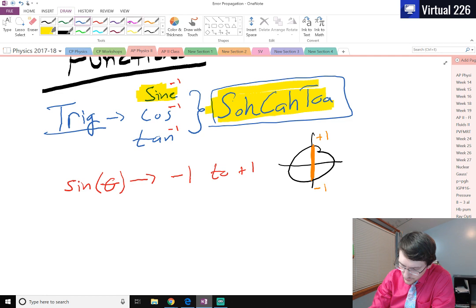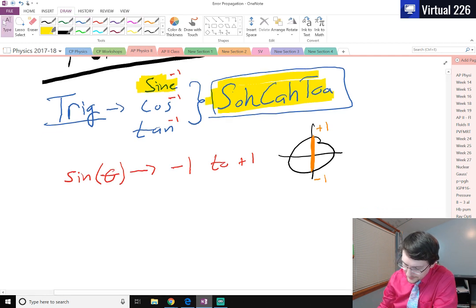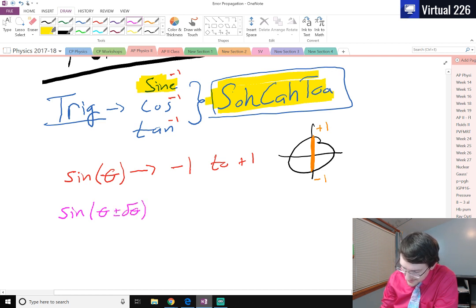However, when we pass a function or a value to sine, some angle, if that angle is measured, then what we're really passing to it is sine of theta plus or minus the deviation of that angle.